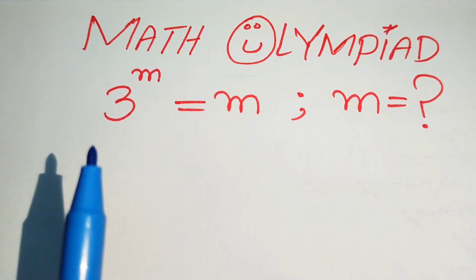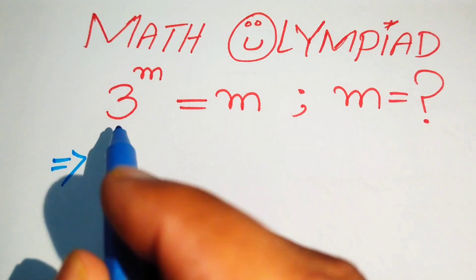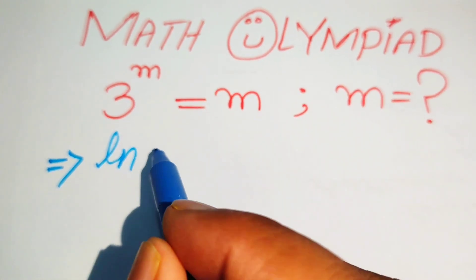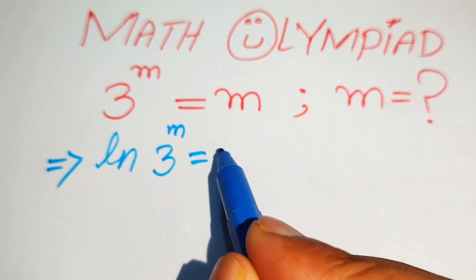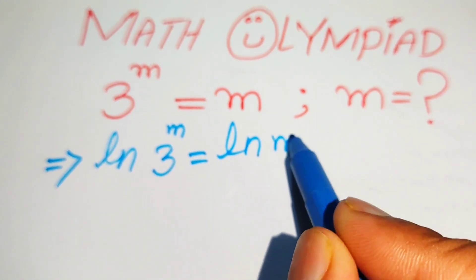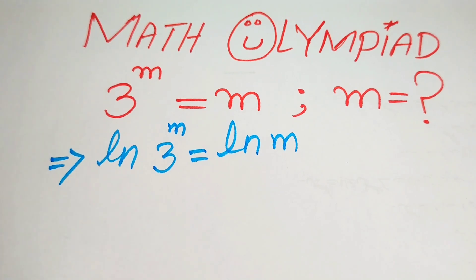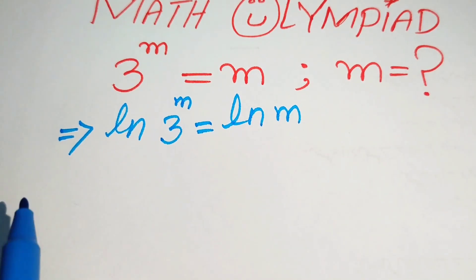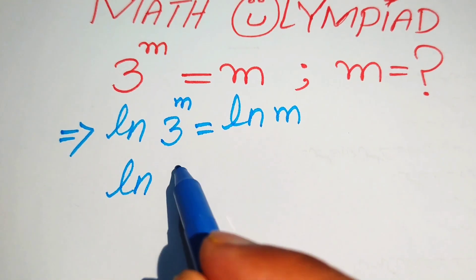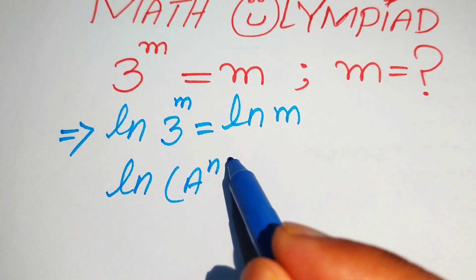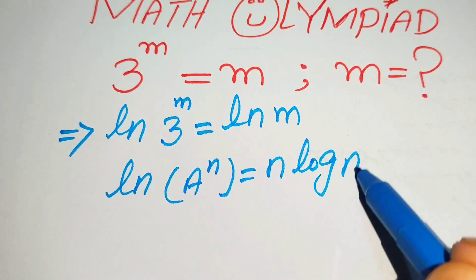The very first step we are going to do is take the log on both sides of this equation. It will be written as log of 3 to the power of m equals log of m. Now in the next step we use the nice property of log: if we have log of a to the power of n, it will be written as n times log a.